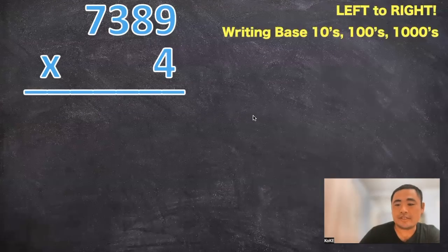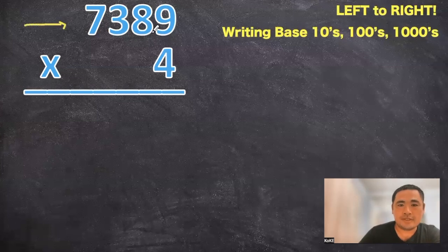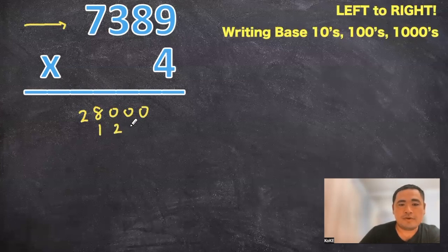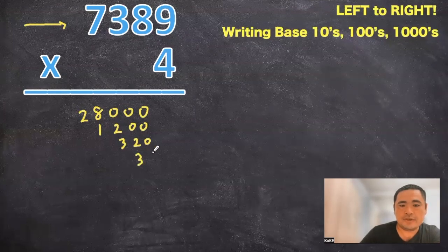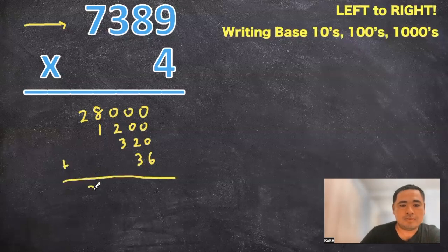All right. So for multiplication, let's start from the left. So seven thousandths times four is going to give us twenty eight thousandths. Three hundredths times four is going to give us twelve hundredths. Eight tens times four, thirty two tens. And nine ones times four is going to give us thirty six ones. So if we add that all up, our answer is going to be twenty nine thousand five hundred and fifty six.